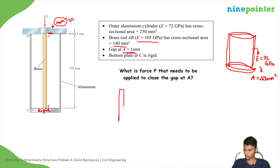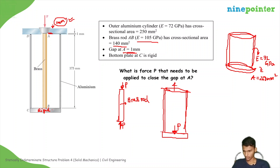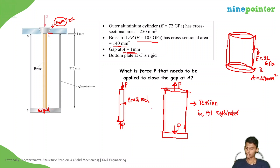On the brass rod, you take the free body diagram — it should have equal and opposite force P. It is compressive. That will apply load P downwards. Because of that, here you will get load P. So there is tension in the aluminum cylinder and compression in the brass rod. The brass rod will contract, and the aluminum cylinder will elongate.